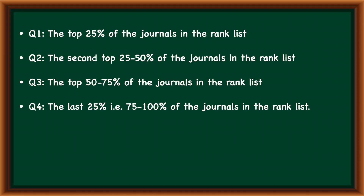Q1 journals, which is generally known as quality one journals, are the top 25% of the journals in the ranked list. The second top 25% journals in the ranked list falls in the Q2 group. The third 25% are the Q3 journals, and lastly, all others occupy the Q4 group.